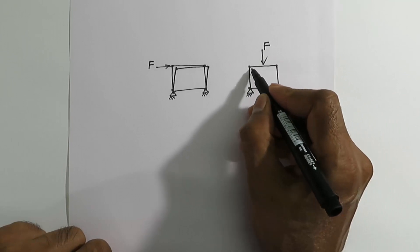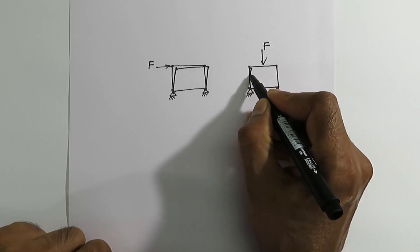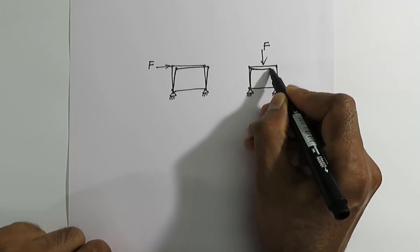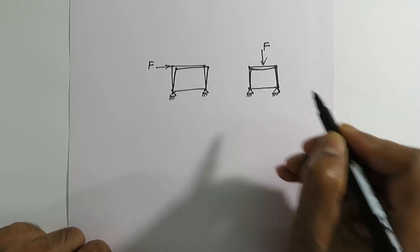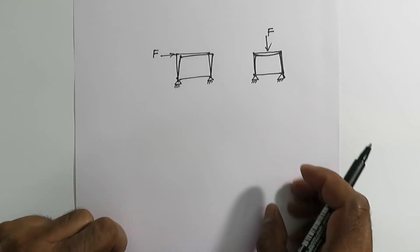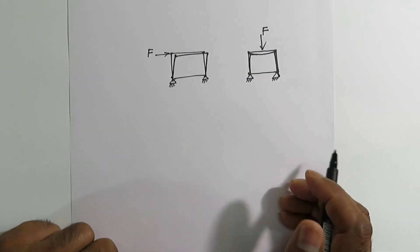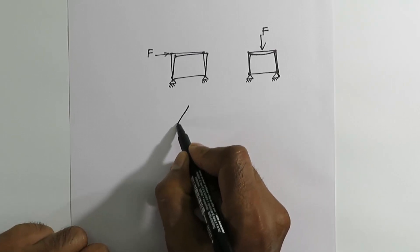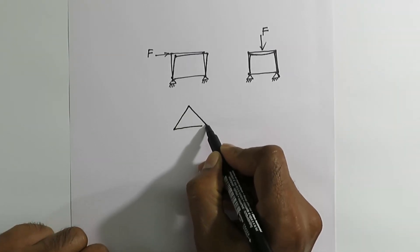If the force is applied at the middle of the top link then again there will be large deflection as there is no direct reactionary force opposing the applied force. There must be certain amount of deflection in the structure before the applied force can be balanced by reactionary forces.